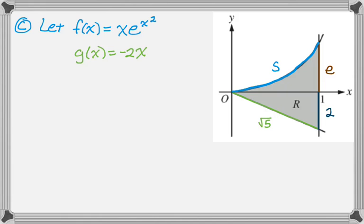So arc length, I'm going to call it s. s is the integral from 0 to 1 of 1 plus f prime of x squared dx. It's not really clear to me, because it says write but do not evaluate an expression involving one or more integrals.